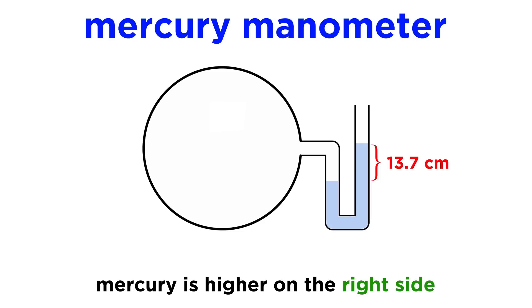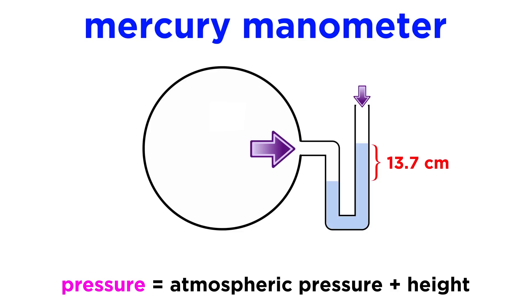This time we have to utilize atmospheric pressure. If the mercury rises higher on the right side, that means that the gas is pushing on it with more pressure than the atmosphere is, so the difference in height of the two arms must be added to atmospheric pressure to get the pressure of the gas.